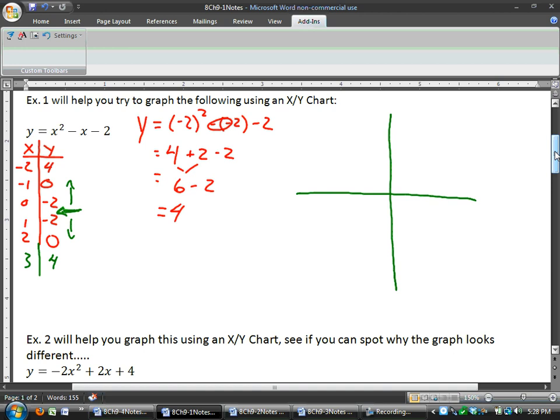So let's go ahead and graph this. We end up with a point at negative 2, 4, a point at negative 1, 0, at 0, negative 2, at 1, negative 2, at 2, 0. And like I said, if we were to go ahead and do it, we would have one at 3, 4. So I'll go ahead and put that point anyways.